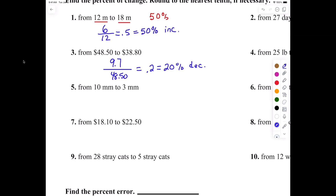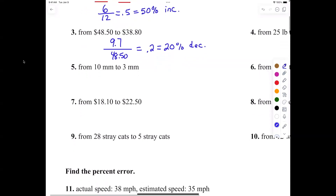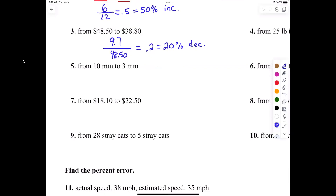So back to what we were saying: the change is always going to be the high minus the low, but then you've got to look and say — did it increase or did it decrease? All right, we're going to start up here at the top: number five. I want you to tell me what the change is and what the original is. So what's my answer?